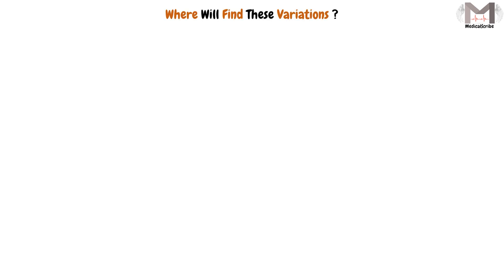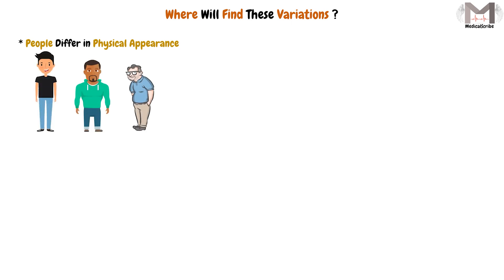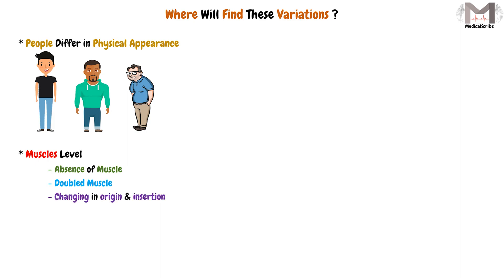Lastly, we should know where these variations are mostly found. People differ in their physical appearance — in shape, length, and other properties. We can also have variations at the muscle level, including the absence of a specific muscle, a doubled muscle, or changes in the origin and insertion of a muscle.